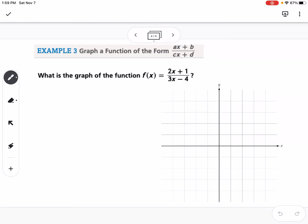Example 3 is to graph f(x) equals 2x plus 1 over 3x minus 4. I like to find a list of all the things, starting with the vertical asymptote. What makes the denominator equal 0? If I set 3x minus 4 equal to 0, I'd add 4 and divide by 3, so that means it's x equals 4 thirds. My horizontal asymptote would be the biggest power of x. I have 2x over 3x, so that would be y equals 2 thirds.